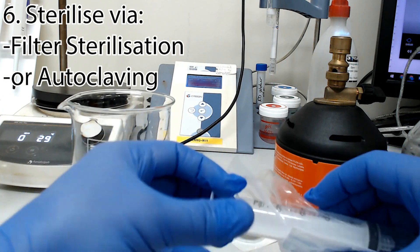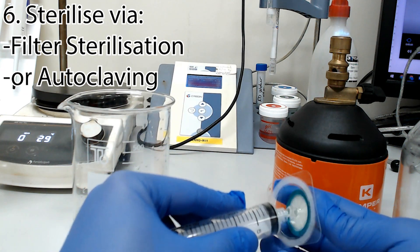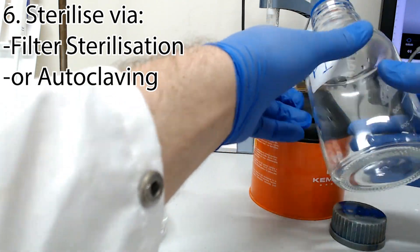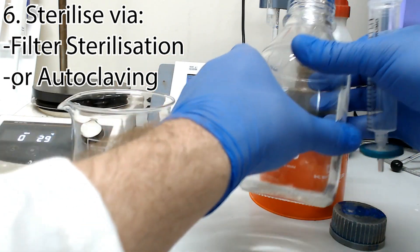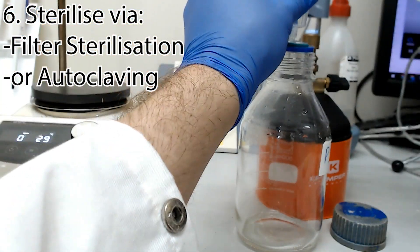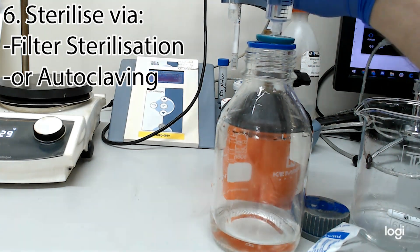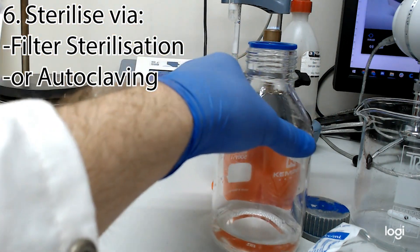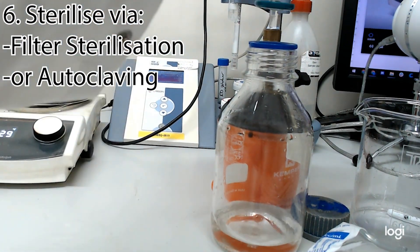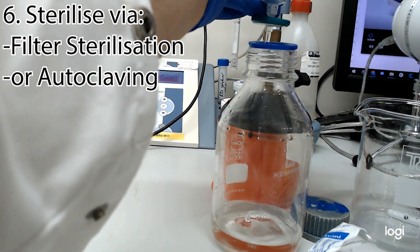Here, we use a 0.22 micron filter to remove any potential contaminants from the solution, and use a syringe to inject it into an autoclaved bottle. Filter sterilizing with a small filter and syringe is difficult and a sweaty process. Watch our demonstrator struggle. Doesn't he look silly? If you're smarter than us, you'll get a larger filter and syringe, or use vacuum filtration to make this process less painful.